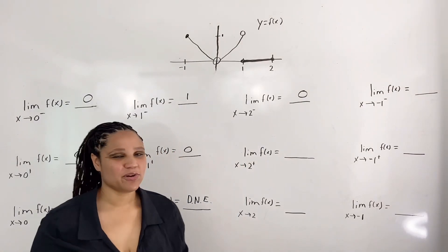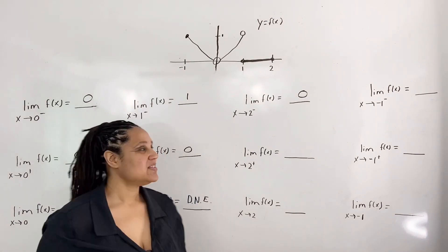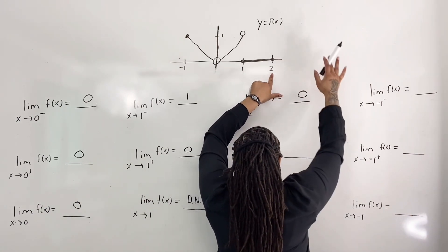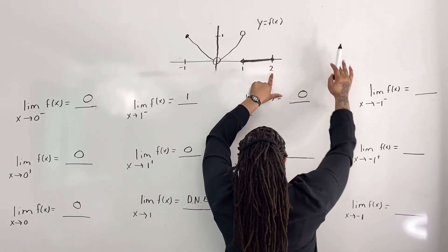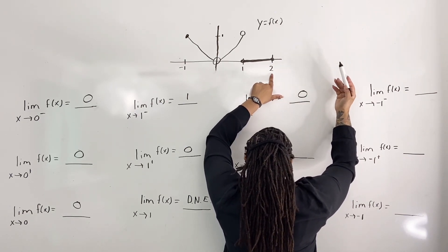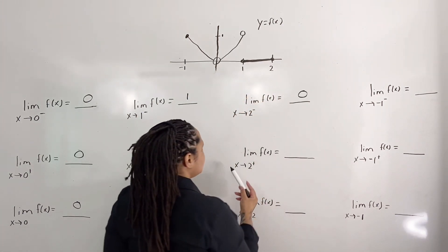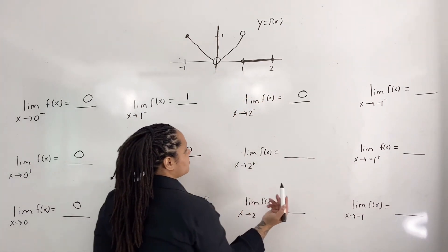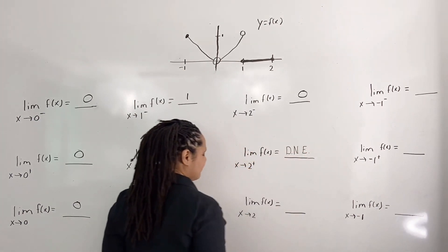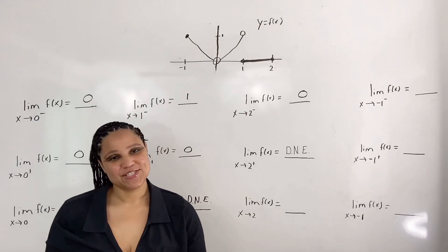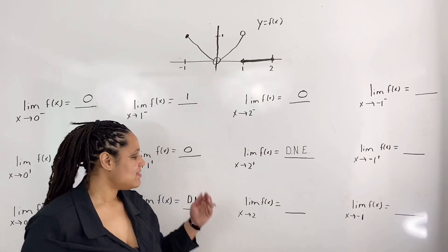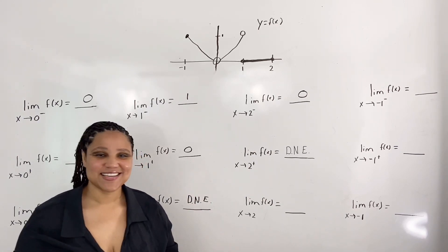Next we evaluate the limit as x approaches 2 from the right. I place one hand by x equals 2, but I see that there is no graph to the right of x equals 2 — 2 in this case is a right endpoint. So the limit as x approaches 2 from the right does not exist. Now we evaluate the limit as x approaches 2. Since the left-hand limit does not equal the right-hand limit, then the limit as x approaches 2 does not exist.